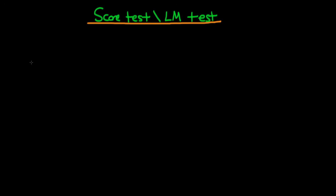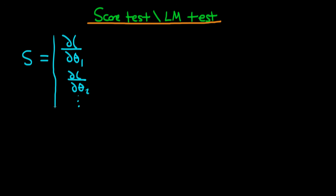In order to talk about this test, we first need to define what we actually mean by score. Score in the multivariate case is typically a vector. The first component of that vector is the derivative of log-likelihood with respect to the first parameter in the model — call that θ₁. The next element is the derivative of log-likelihood with respect to θ₂. We continue building the score vector by evaluating the derivative of likelihood with respect to each of the parameters in our model.